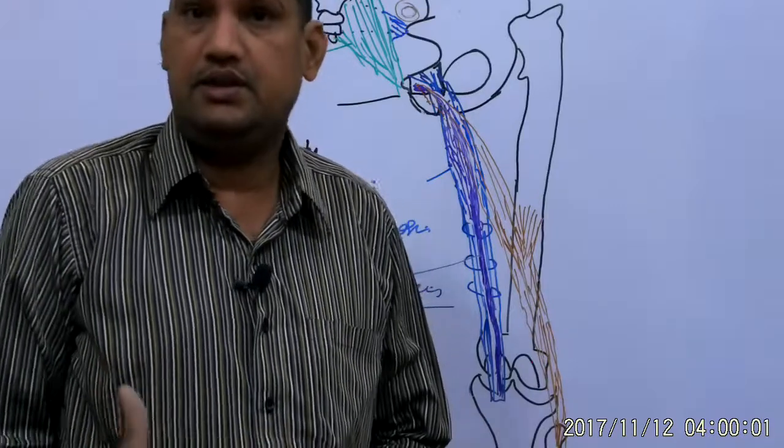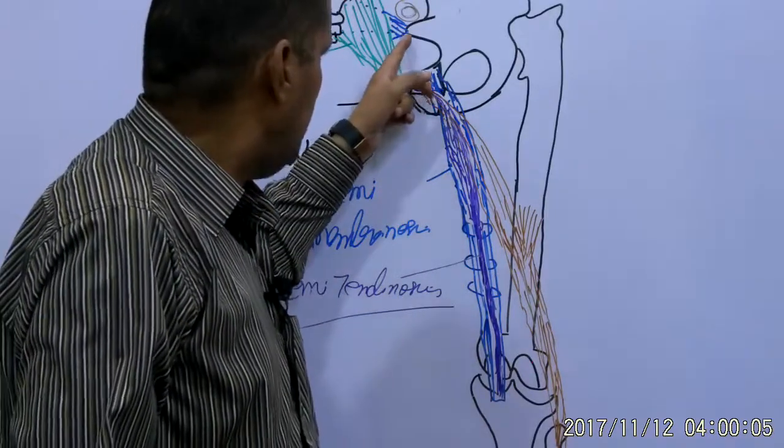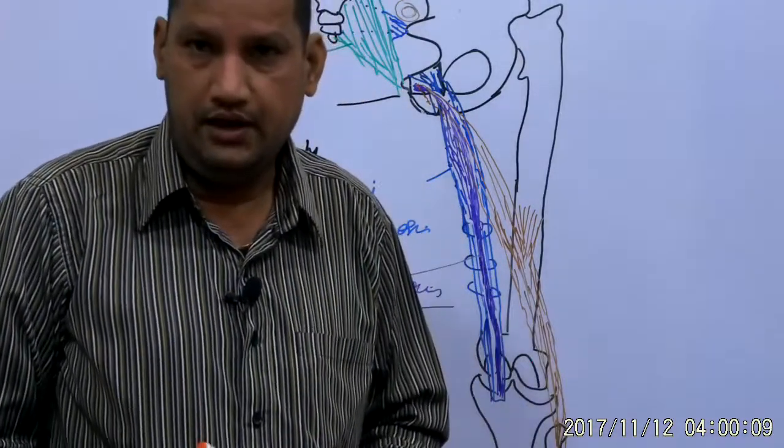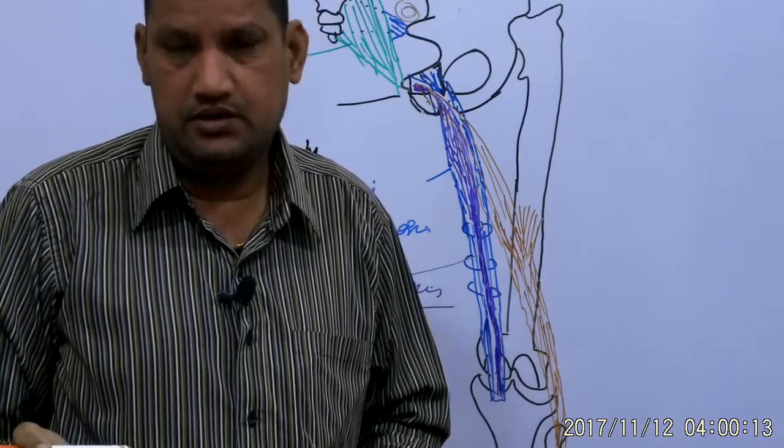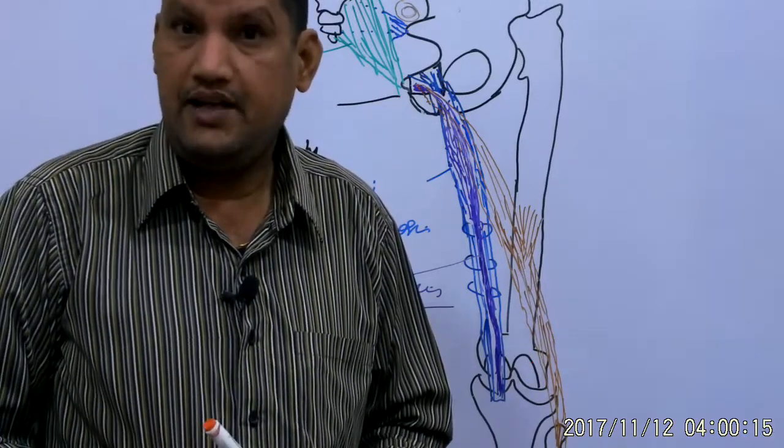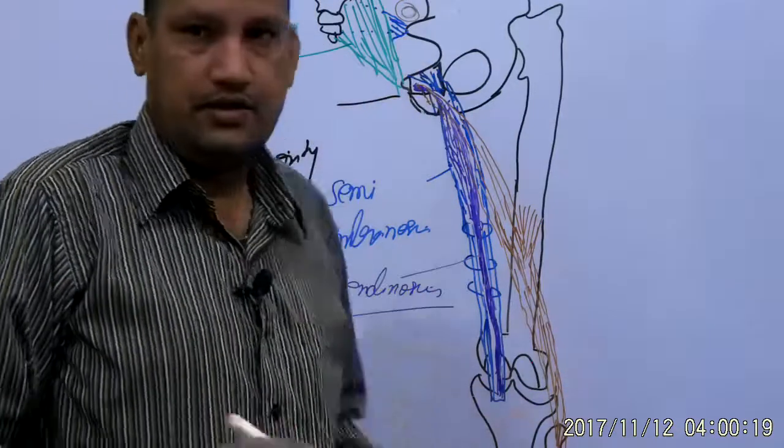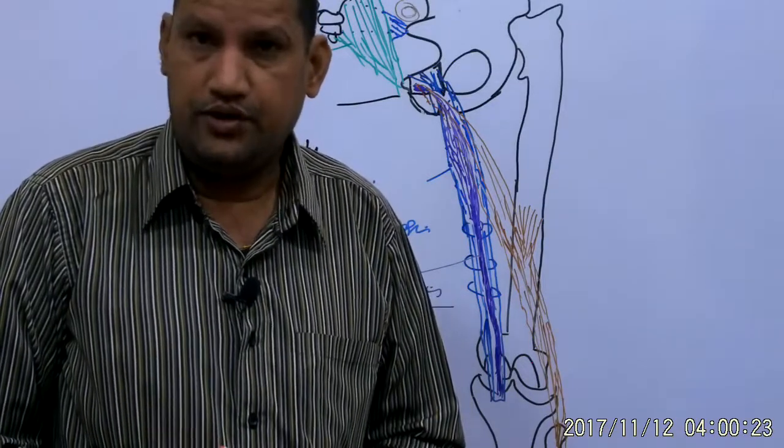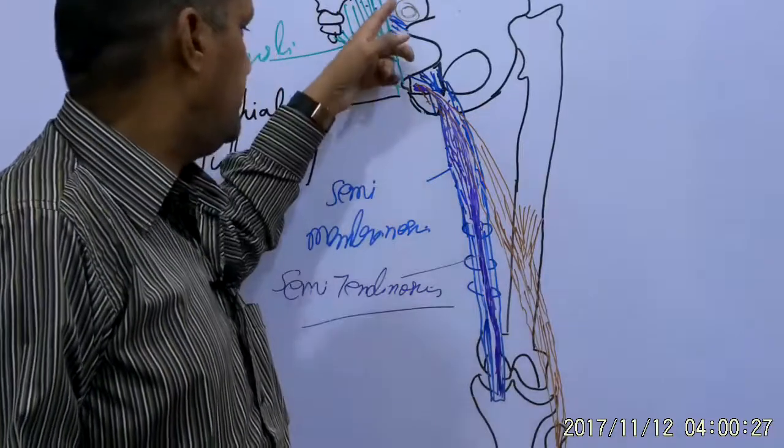The piriformis muscle is the key muscle of this region. Some structures are coming out or enter in the pelvic cavity below the muscle. Altogether, eight structures are running below the piriformis and superior gluteal vessels and nerves are above the piriformis muscle.